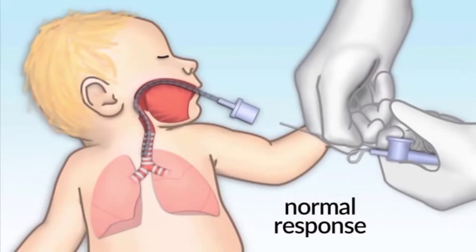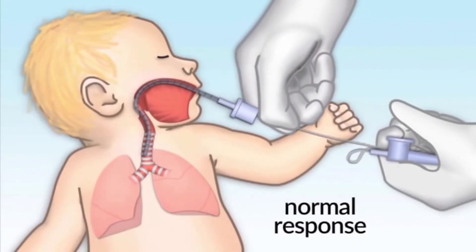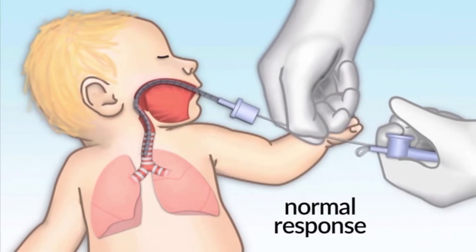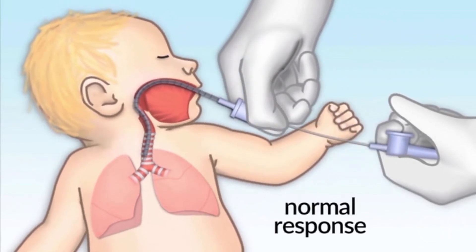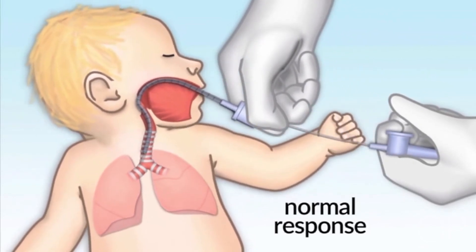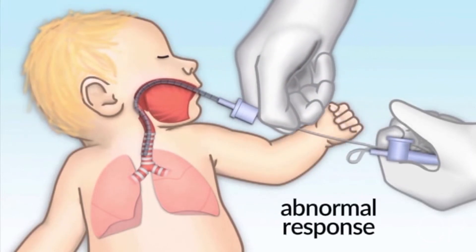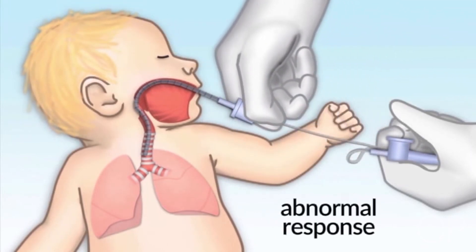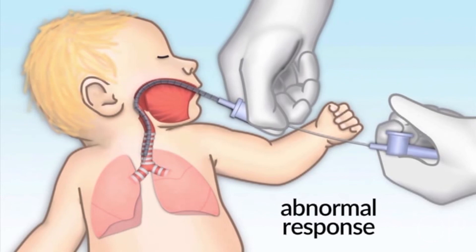In patients with a normal pharyngeal reflex, you will observe that the patient coughs in response to stimulation of the carina. In patients with an abnormal pharyngeal reflex, you will observe an absence of coughing in response to such stimulation.